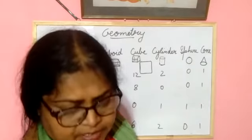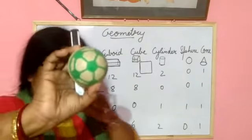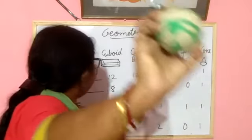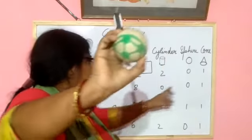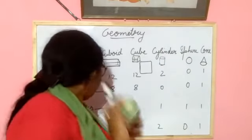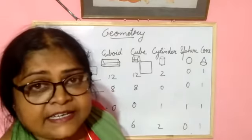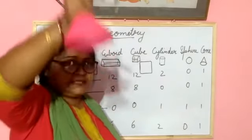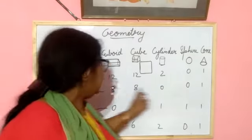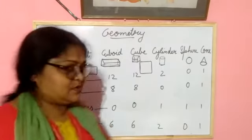Next, you learned about the sphere. In the sphere: 0 edges, 0 vertices, 1 curved face, and 0 plane faces. Next, the cone: 1 edge, 1 vertex, 1 curved face, and 1 plane face.